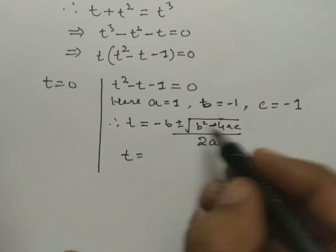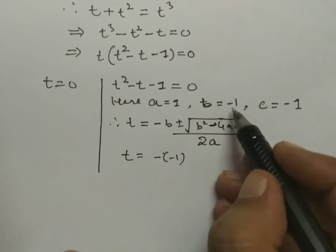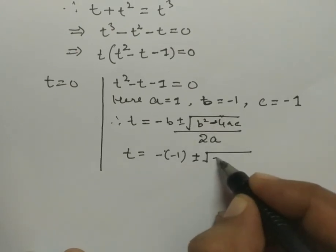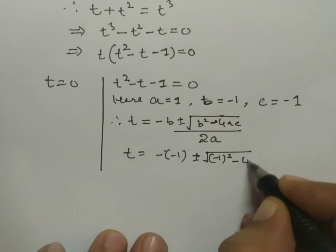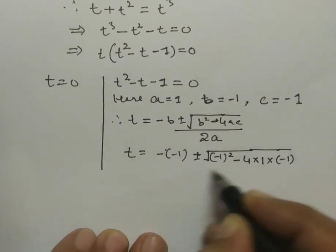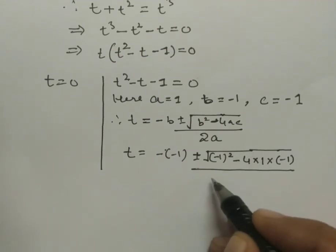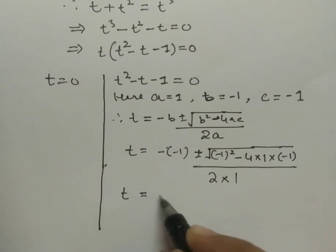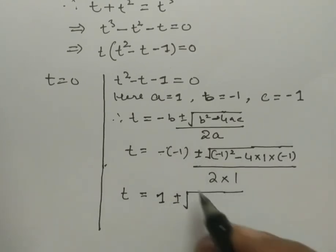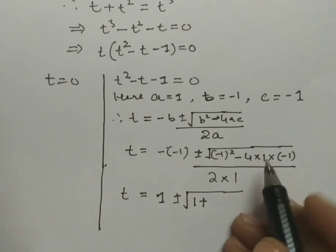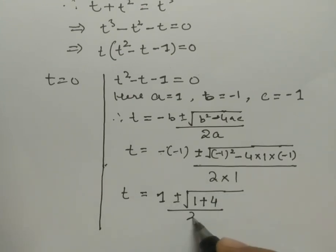Substituting the values: b = -1, so -b = 1. Then b² = (-1)² = 1, and 4ac = 4 × 1 × (-1) = -4. So the discriminant is 1 - 4(-1) = 1 + 4 = 5. The denominator is 2 × 1 = 2.